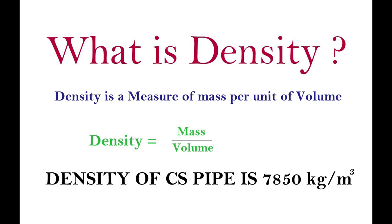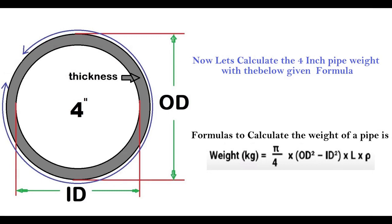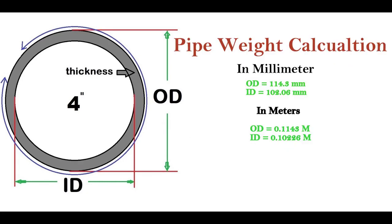So now let's calculate the four inch pipe weight with the help of the formula given below. The formula to calculate weight is equal to π/4 × (OD² - ID²) × length of pipe × density. Here, length of pipe we will take as 1 meter.